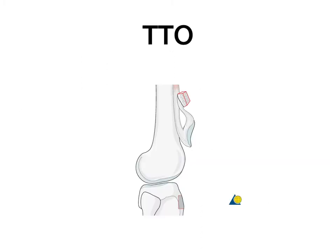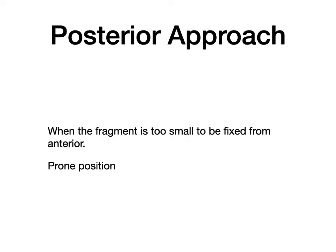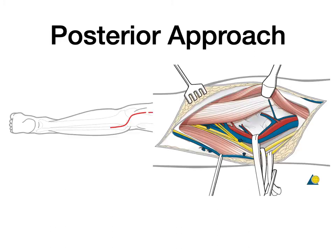Tibial tubercle osteotomy is a very extensile approach, sometimes needed to fix bicondylar Hoffa's fractures. The posterior approach is used when the fragment is too small to be fixed anteriorly, performed in prone position — familiar also from some tibial condyle fracture surgeries.